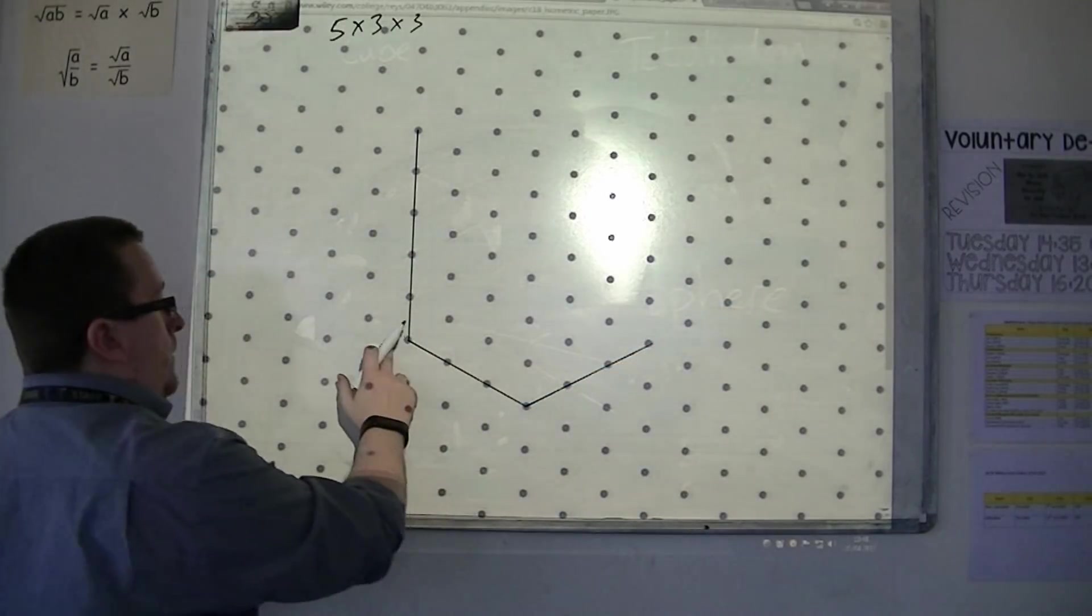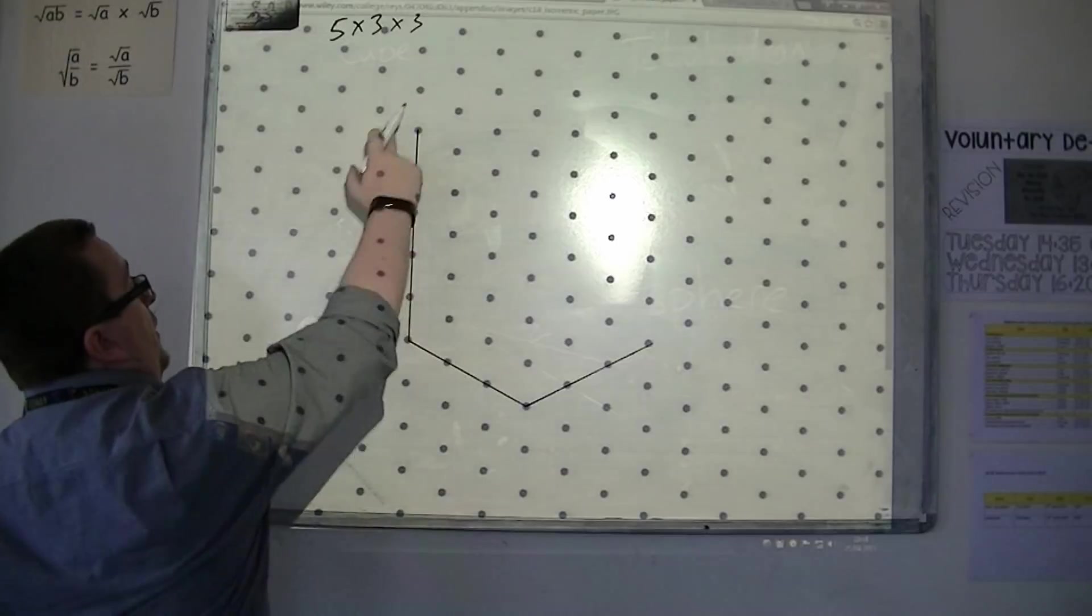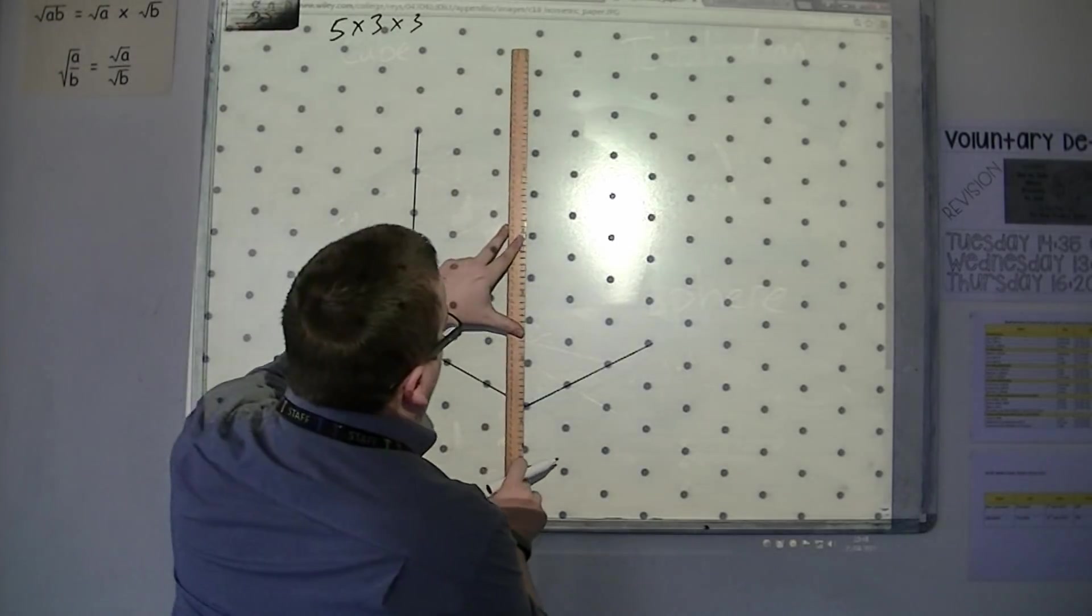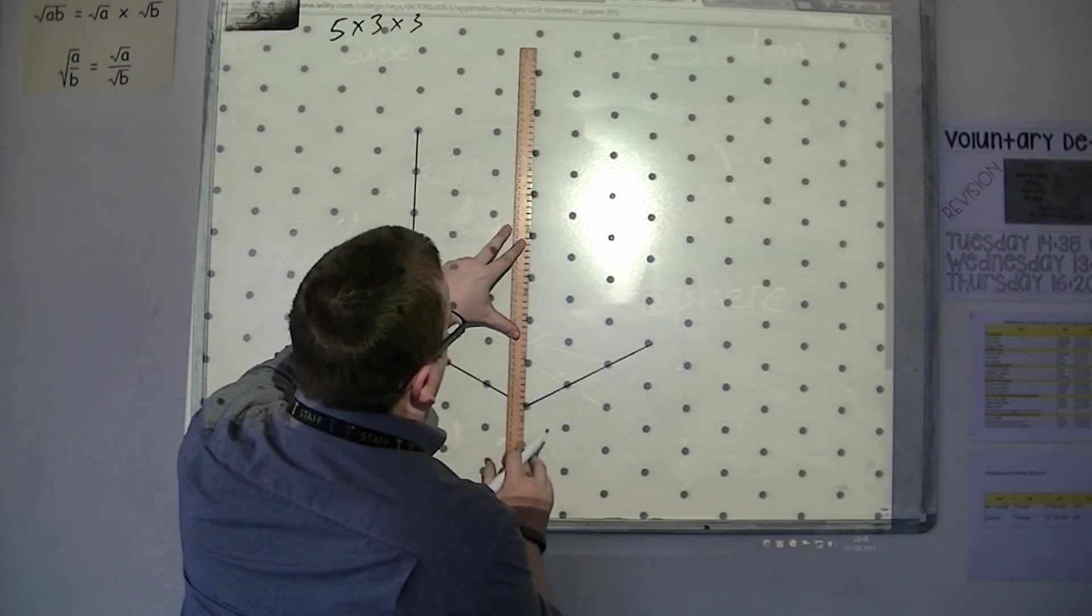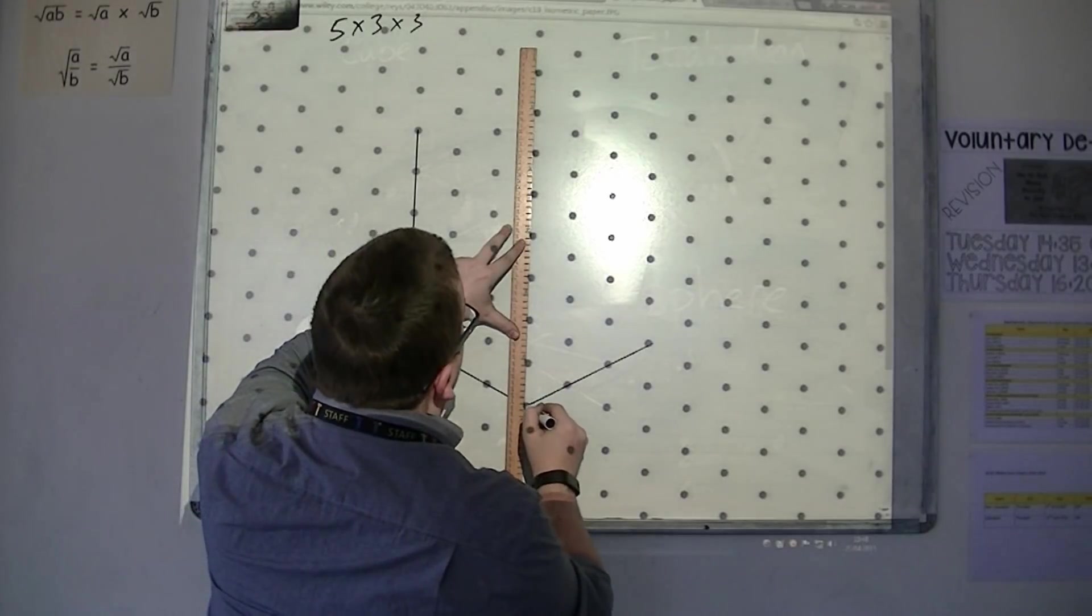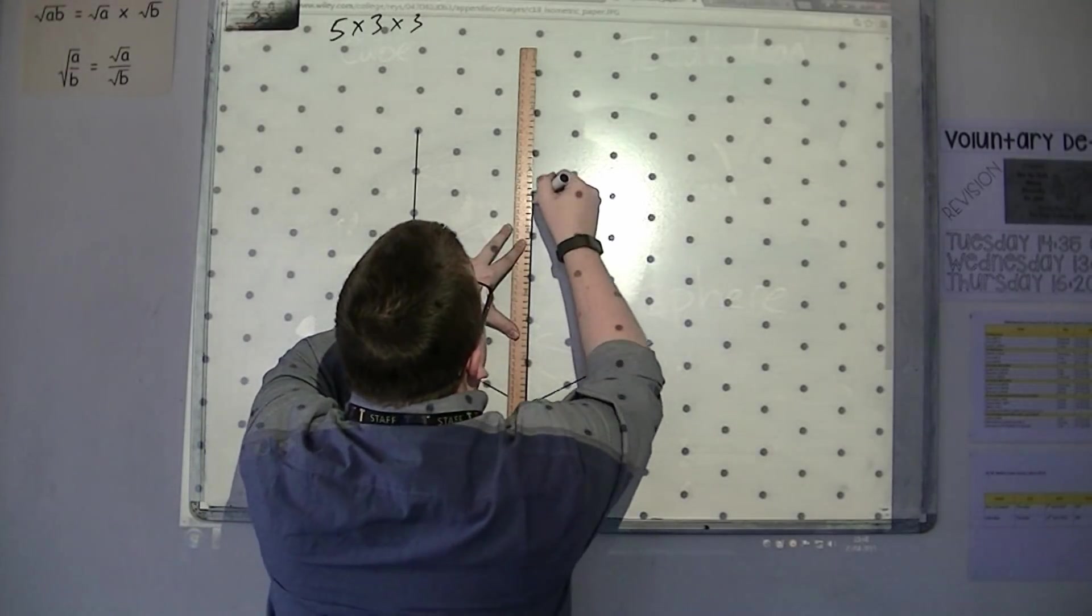So, that's the base. That's the height. And then, you can start to fill in the rest of the dimensions. So, from that corner, it must be 5 high. So, 1, 2, 3, 4, 5.